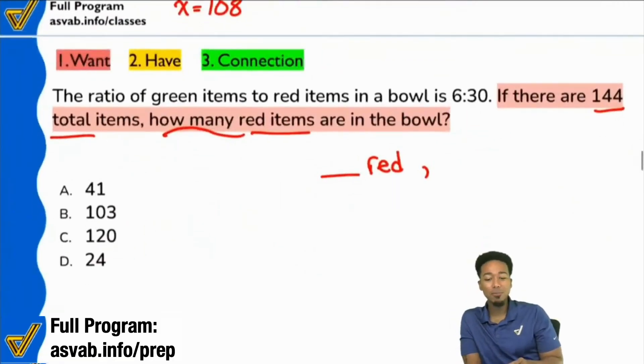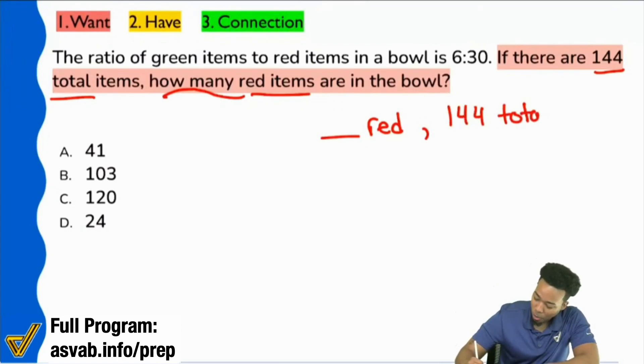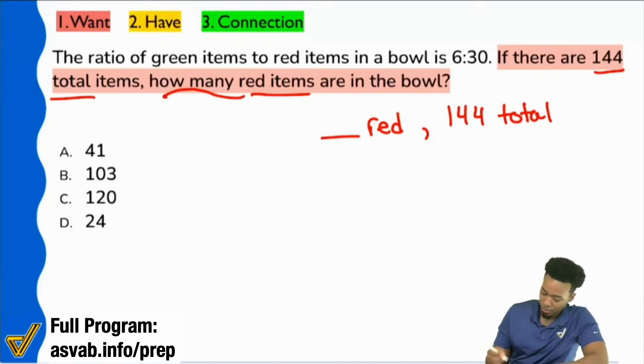Now, we are comparing how many red to 144 total. Now, why did I emphasize that? Because again, when it comes to proportions, we have to compare the same things in the same way. Now let's read the next part of the problem here, the information.